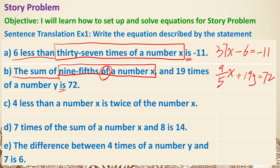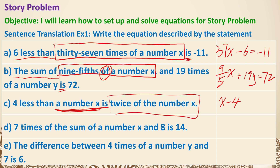Now you can pause here and try to see if you can translate c, d, and e. Let's have a look. 4 less than a number x: 4 less than x is x minus 4. And then it says it's twice of the number x, which is 2x. The word 'is' is the equal sign again. So x minus 4 equals 2x.